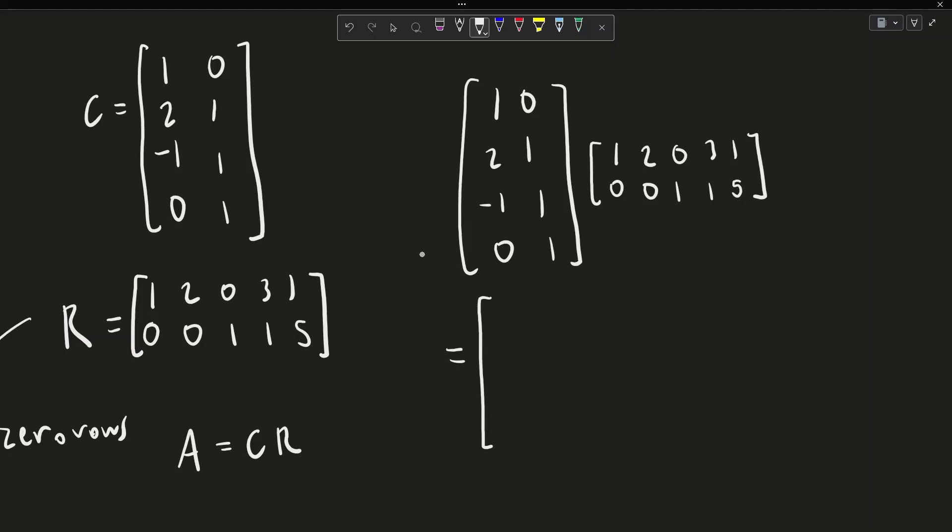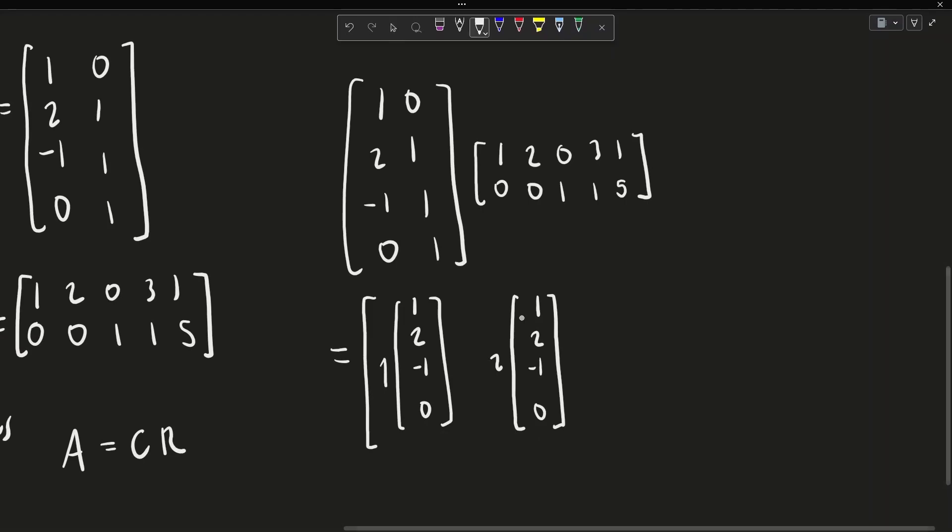The first entry into this matrix is 1 times the first column, and then 0 times the second column, so we'll leave that as 0. The second entry is 2 times the first column, and again, 0 times the second column. The third entry is 0 times the first column, and 1 times the second column.